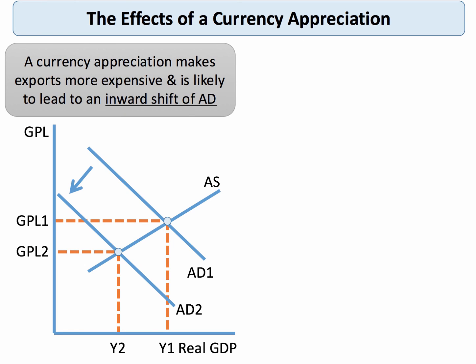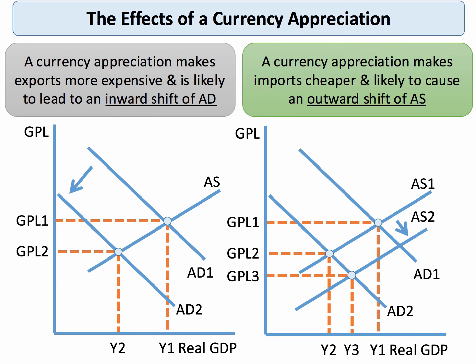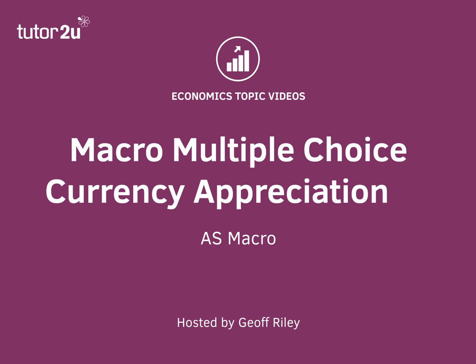That gives me a chance to do 30 seconds on currency appreciation. A currency appreciation — for example, a rise in the value of the pound externally against the dollar or the euro — makes exports more expensive and is likely, depending on the elasticity, to cause an inward shift of aggregate demand. That's deflationary for both inflation and growth. But what a lot of students forget is that currency appreciation also makes imports cheaper, causing an outward shift of aggregate supply — that's better news for growth but also helps bring down inflation. So that's the answer to this question. Thank you.